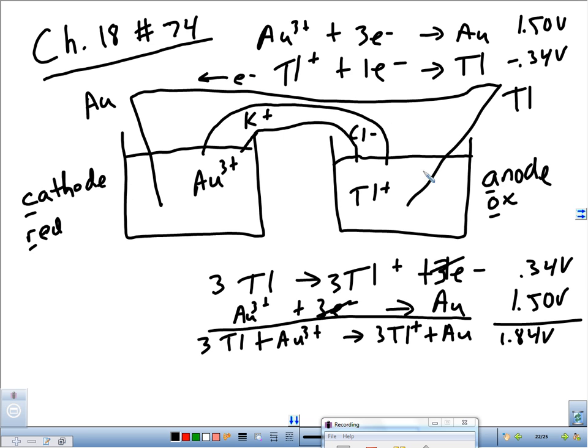So it always goes from the anode to the cathode, air conditioning. The electrons are traveling in the wire this way. And hopefully that makes sense because the thallium is losing electrons through the oxidation. The electrons travel through the wire and go to the gold. The gold gains them and becomes reduced. If I massed the two electrodes, which one would be heavier after running this for a while? Gold.